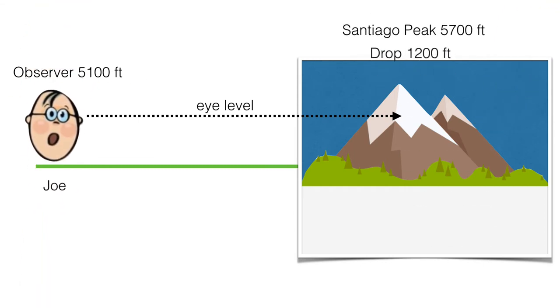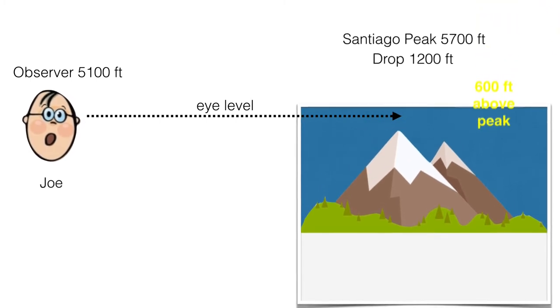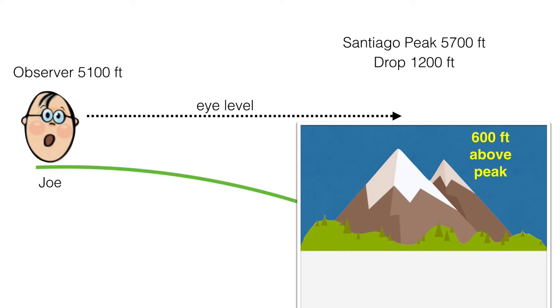Well, Joe says that the Earth is a globe. So at, I think it's like 41 miles distance, the curvature drop should be 1,200 feet. So let's drop that mountain down 1,200 feet, which means that the eye level, if you do the math, would be approximately 600 feet above the mountain peak. So that's what Joe is predicting.